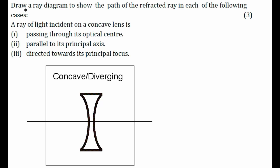Let's try to answer this question from the chapter on light, based on the concept of lenses. The question asks us to draw a ray diagram to show the path of the refracted ray in each of the following cases. They have given us three cases involving a ray of light incident on a concave lens — a concave lens is nothing but a diverging lens, and it looks like this.